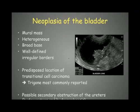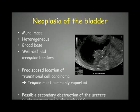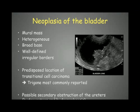Neoplasia of the bladder is quite common. It will appear as a mural mass — generally quite heterogeneous with an irregular surface and a broad base. The broad base is quite an important criterion to differentiate it from polypoid cystitis, where we have pedunculated masses. When it has a broad base, it is very suspicious of neoplasia. Most of those bladder tumors are transitional cell carcinoma, with a predisposed location at the bladder trigone.